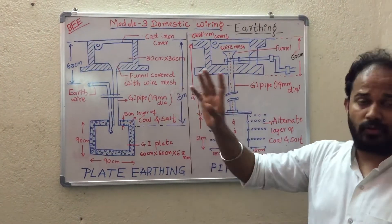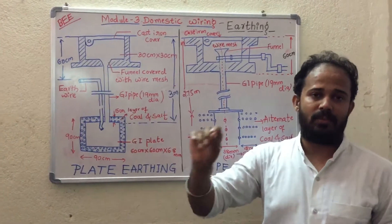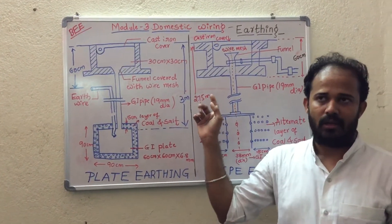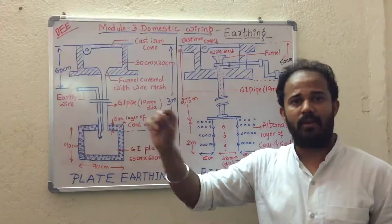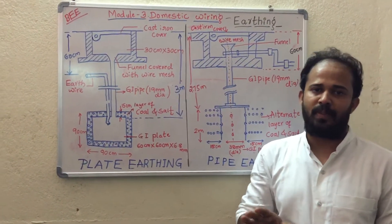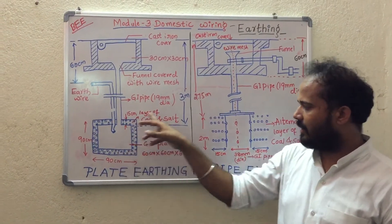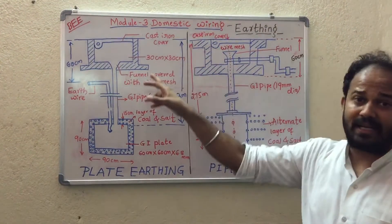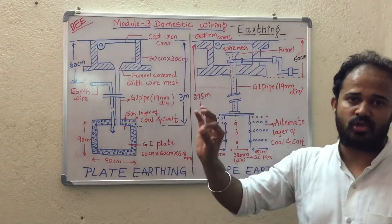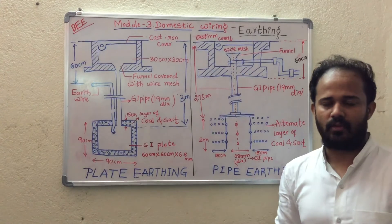These are the two types of earthing. For your examination, there will be one compulsory question on earthing, either plate or pipe. The question will be of the form: what is earthing, what is the necessity of earthing, explain either plate earthing or pipe earthing with neat diagram. In the diagram, the important points are the dimensions. Every dimension should be covered. Thank you.